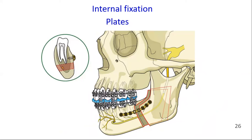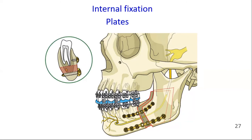A plate can be applied across the segments on the lateral aspect of the mandible using monocortical screws. A minimum of two screws on each side of the osteotomy is necessary. Avoid placing the plates and screws in close proximity to the inferior alveolar canal in order to avoid damage to the inferior alveolar nerve. For additional stability, a second mini plate can be added close to the inferior border of the mandible using bicortical screws.